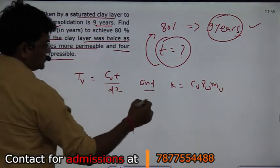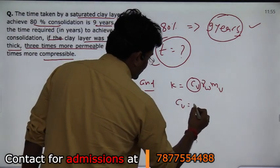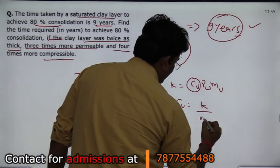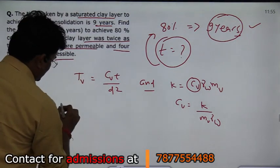So if you have the value of Cv, this is K divided by Mv multiplied by gamma w. So in this expression...